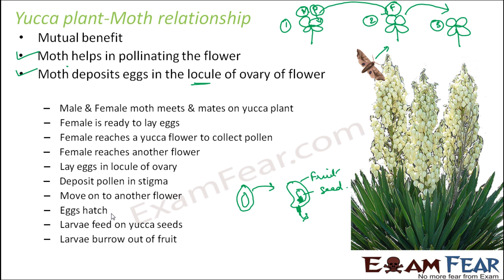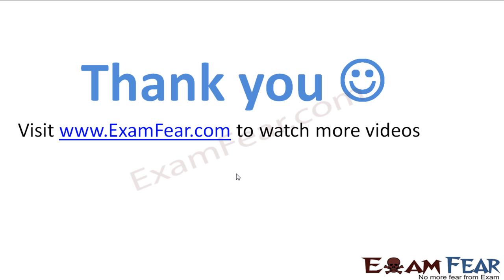Once the larva has received enough nourishment and grown sufficiently, it burrows out of the fruit, goes deep into the ground, makes a cocoon there, and remains dormant for some time. When it grows up, it comes out of the soil, meets its male counterpart on a yucca plant again, and the cycle continues. This is how the mutualistic relationship between the yucca plant and moth works — the insect pollinates the plant, and the plant provides benefit to the insect in return.